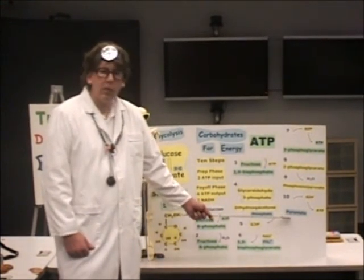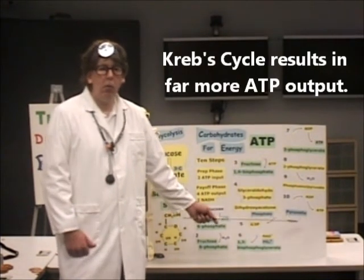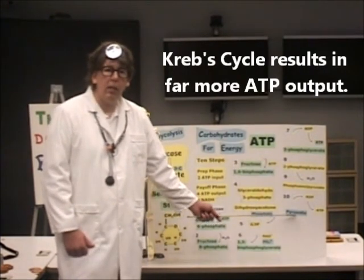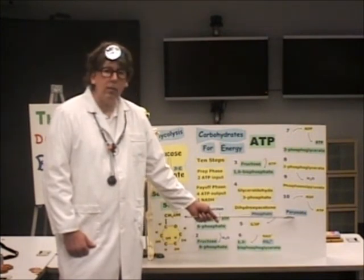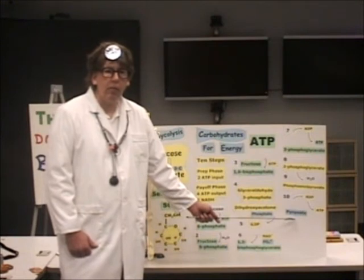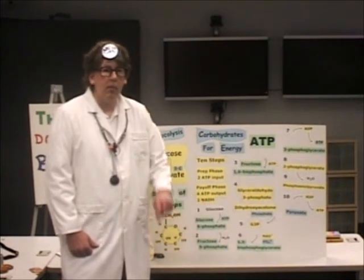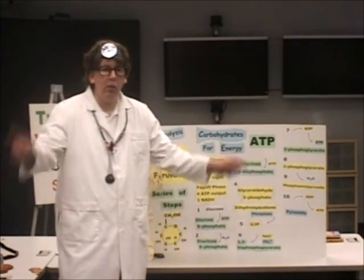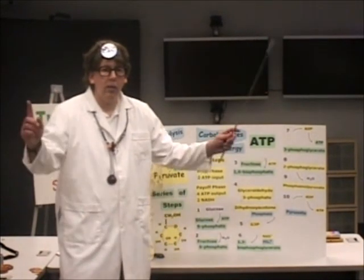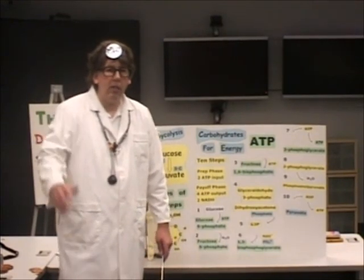If you wanted to go into the Krebs cycle, it's a wonderful way to get further ATP — many more ATP — because we've got two of these pyruvate molecules and each of them has three carbons. We'll do that in another show about the Krebs cycle. I've got my hula hoop with all of the steps on it representing the Krebs cycle. We'll see you in the next show. Take care, bye for now.